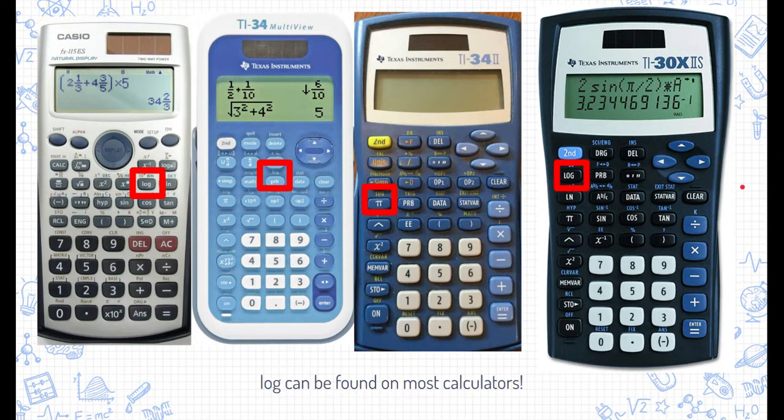I might need to use the secondary button in order to use the log functions. Another important key or button that might be useful on one of your calculators is the negative button. In order to calculate pH, we need to calculate the negative log of something. And many calculators have a designated button to turn a number into a negative number.